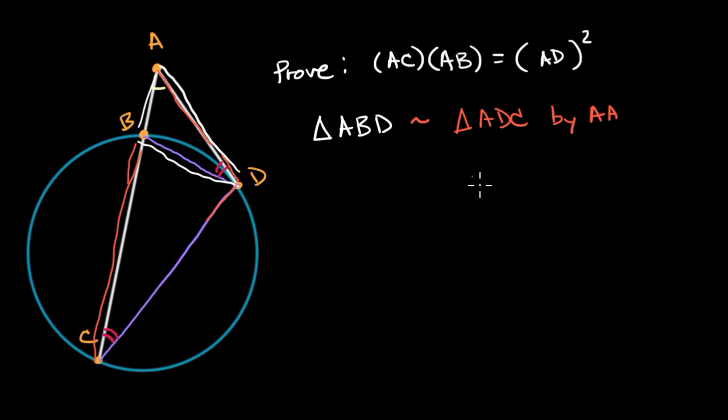So now this allows us to set up a proportion. We could say that the ratio of, let's look at the big triangle first, the ratio of the length of AC, the longest side to its shortest side, AD, is going to be equal to the ratio, let's look at the smaller triangle now.